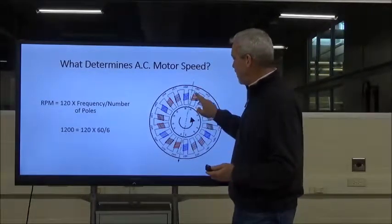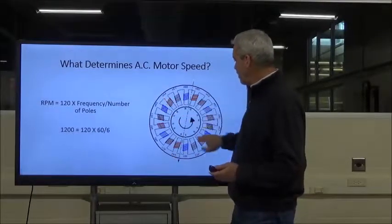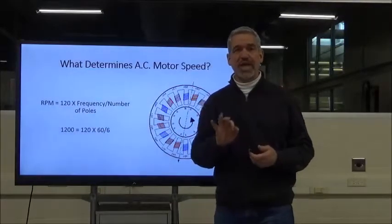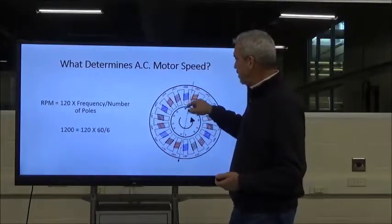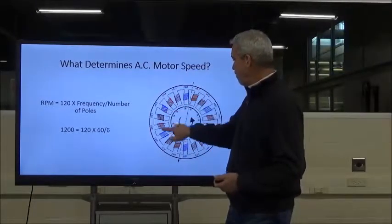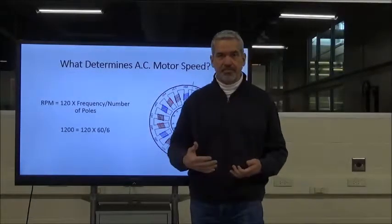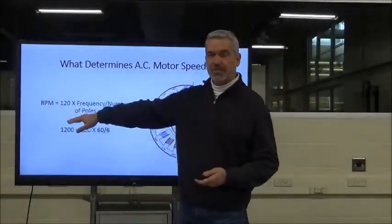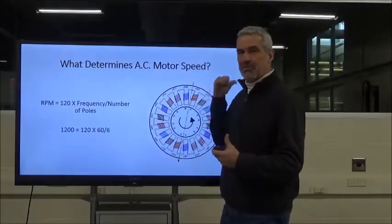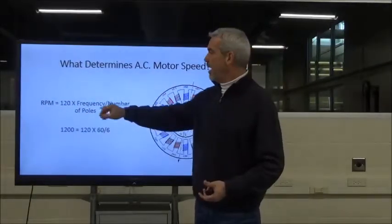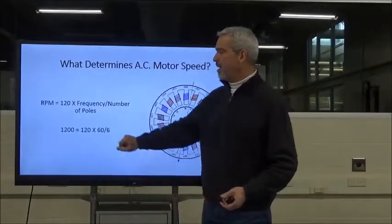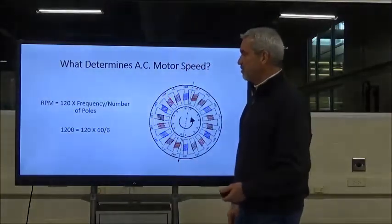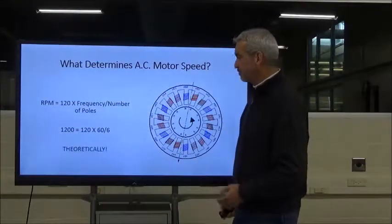This is a six-pole motor — there are six poles per phase. Using the formula: 120 × 60 ÷ 6 = 1,200 RPM theoretically. Each time we add more poles, we slow the motor further. That's the relationship between pole count and speed.